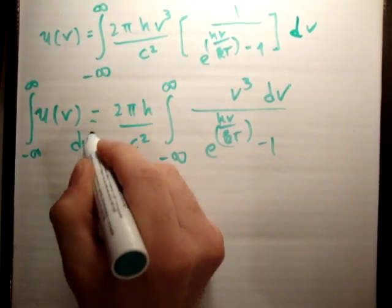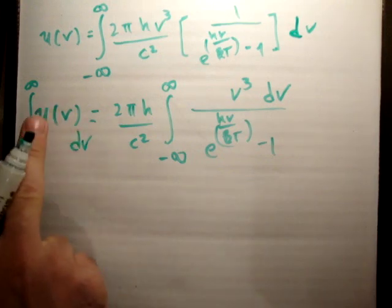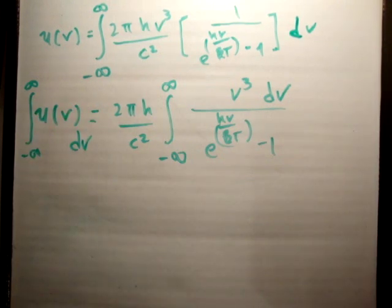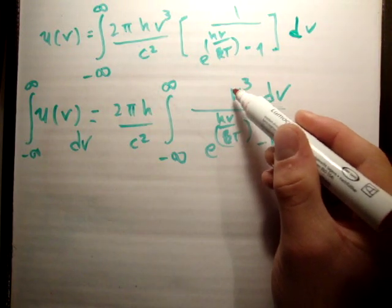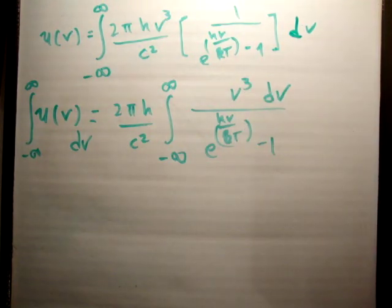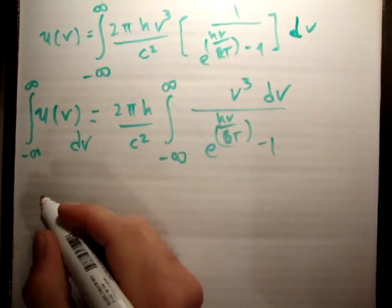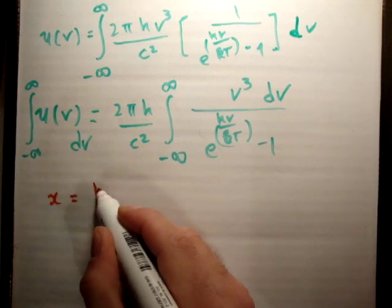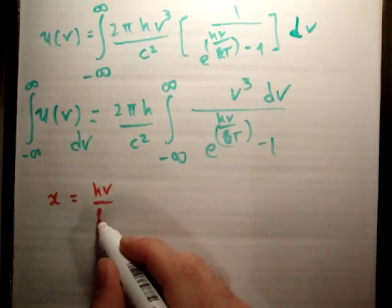What is the obvious variable change you're going to do? There's no point using the constants, and just changing nu won't help. What's left is the exponent on the exponential. Let's call the exponent x: x equals h nu over kT.